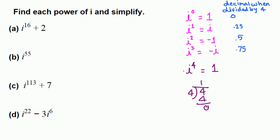Let's try i raised to 8. When 8 is divided by 4, that's 2 with no remainder, 0 remainder. So that means 1 again.